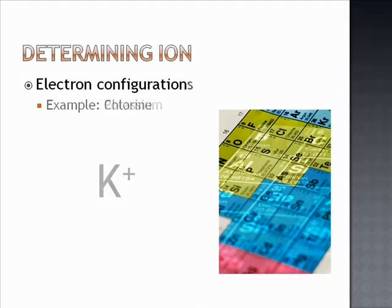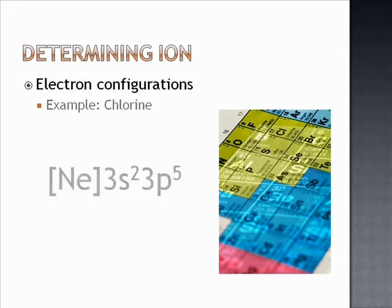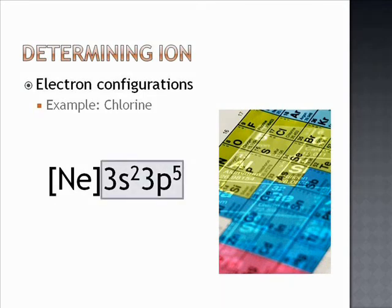In our second example, we will look at the non-metallic element, chlorine. Chlorine's electron configuration is neon 3s2-3p5. This shows us that there are seven valence electrons. Therefore, it is one electron short of having the same electron configuration as argon.